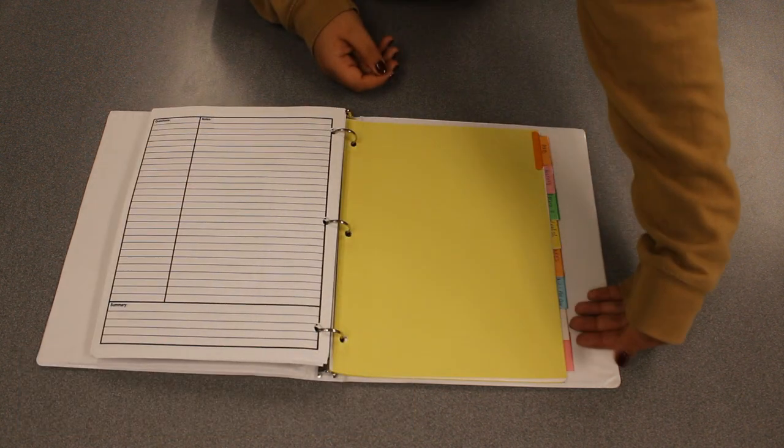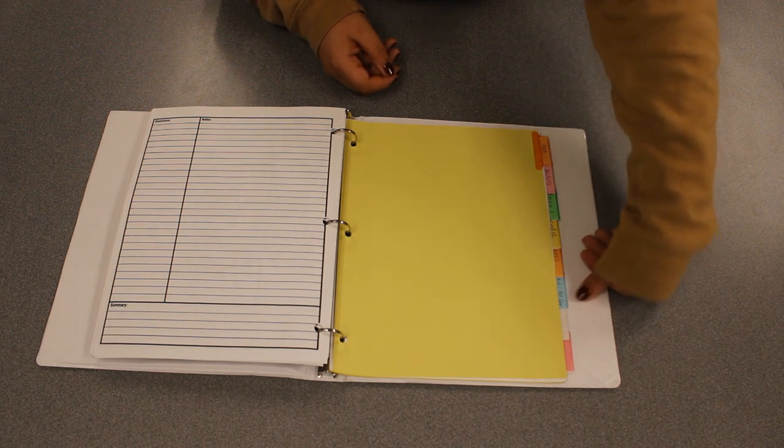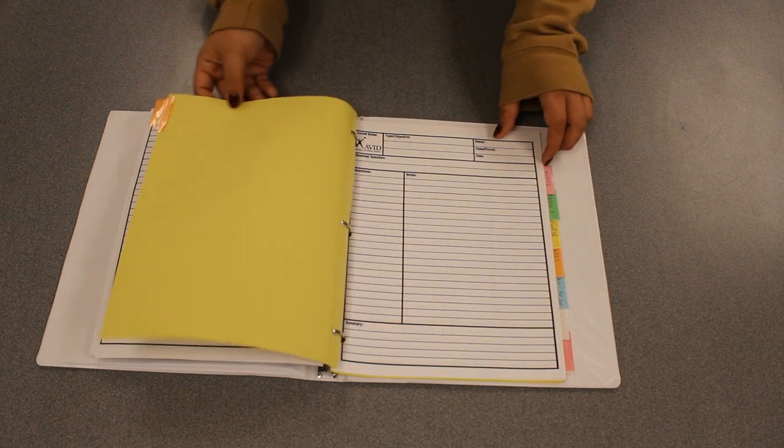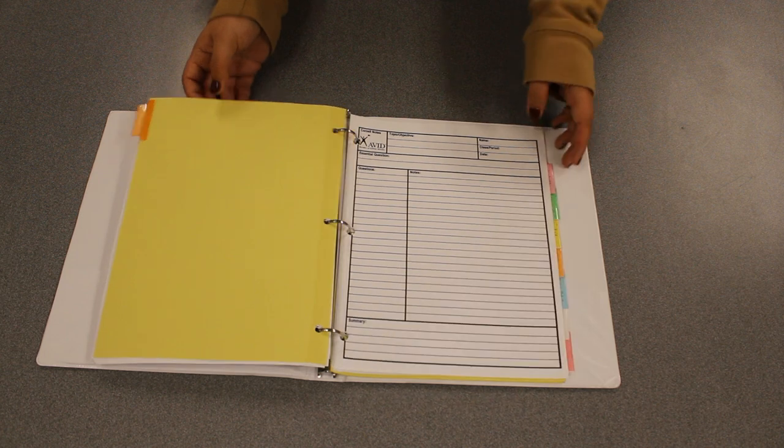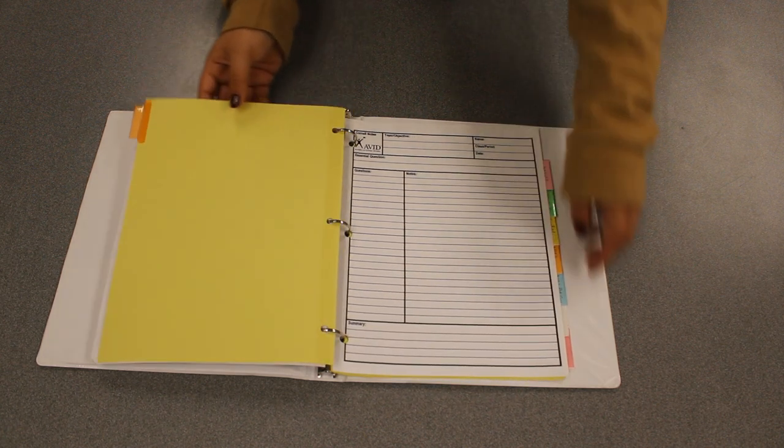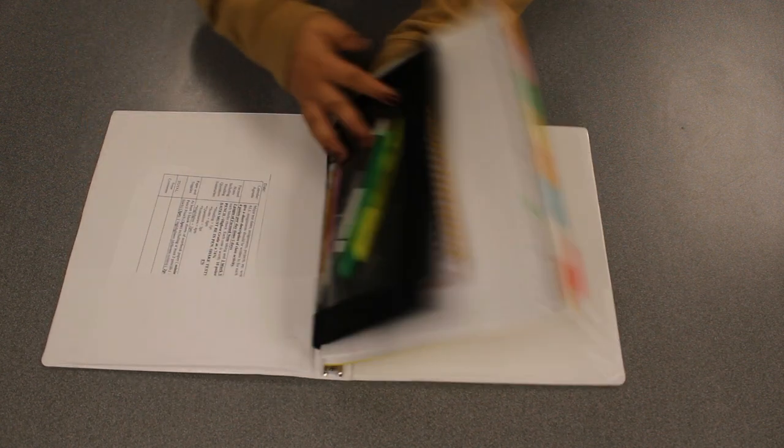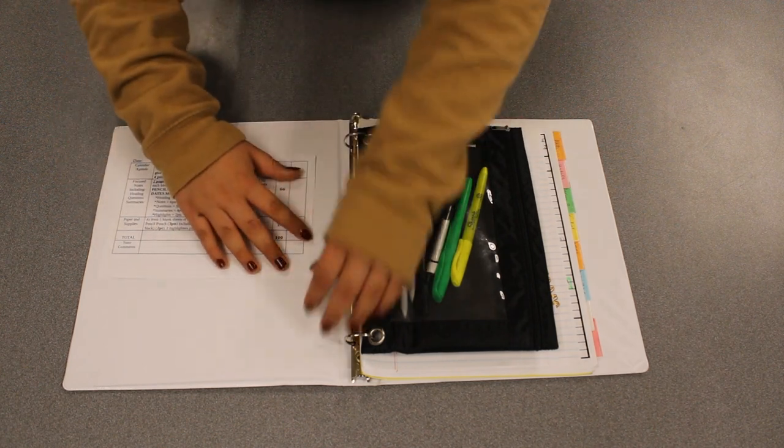Now as we flip to the dividers you're gonna have one divider for every class period and this is where you're gonna store all of your notes, important papers, assignments, and their respective dividers. That way it's all neat and organized. With that being said you're gonna have nothing in your pockets when these binders are turned in except for your binder sheet that your tutors need to be able to grade your work.